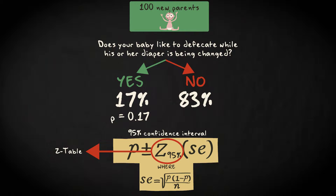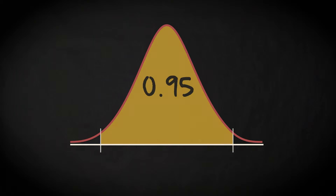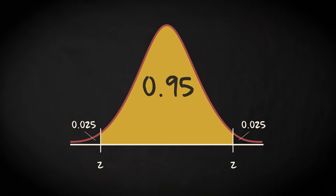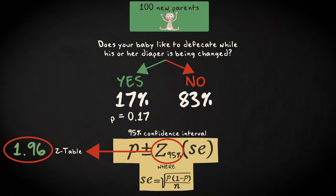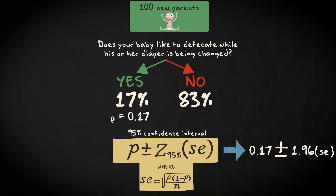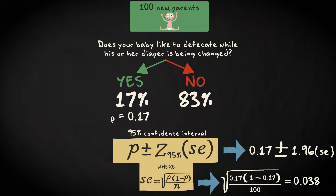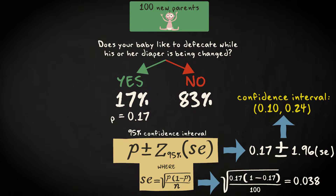You can look up the Z-score for a 95% confidence level in the Z-table. Look at this standard normal distribution here. When you have a 0.95 probability that your value falls within Z-standard errors from the mean, that means that 0.025 probability falls in the two tails. If we look up the Z-scores which are displayed here in the Z-table, we find values of plus and minus 1.96. We can now easily compute the interval: 0.17 plus and minus 1.96 times the standard error, which is the square root of 0.17 times 0.83 divided by 100. This leads to a confidence interval with the endpoints 0.10 and 0.24.